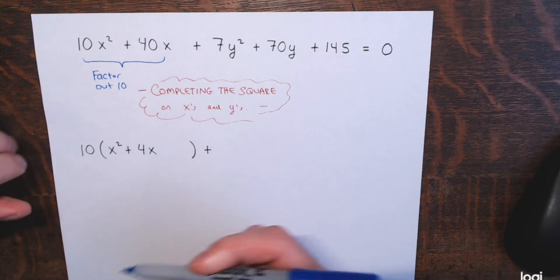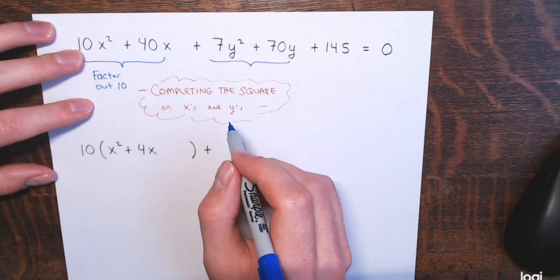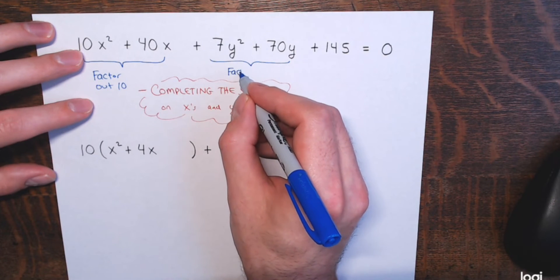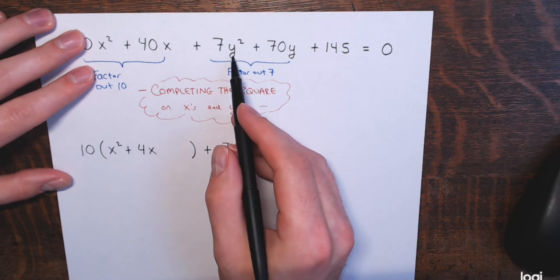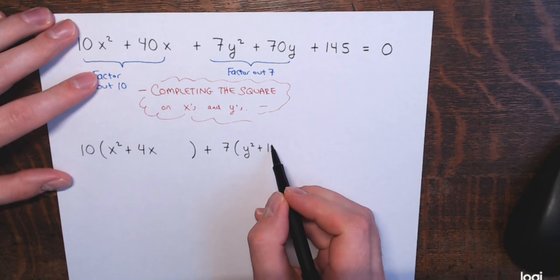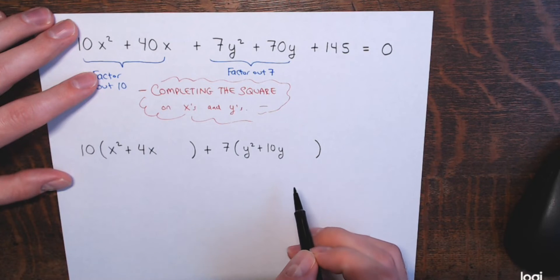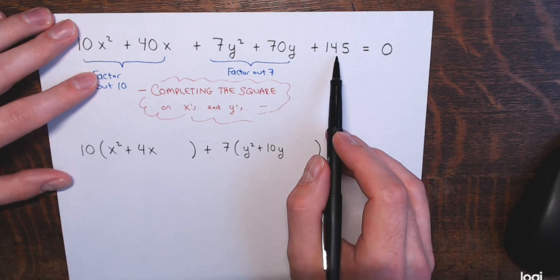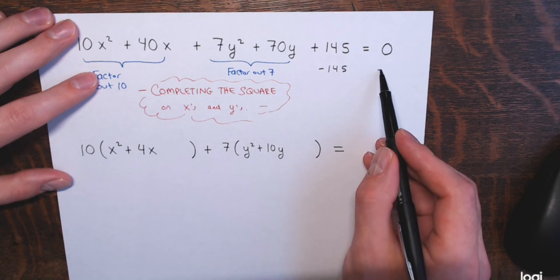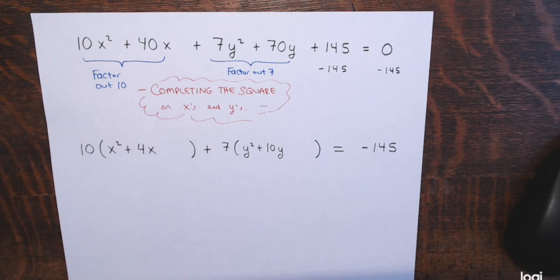Then do something similar for the y terms. The y² term has a coefficient of 7, not 1, so I'll factor out 7 from just the y terms. That gives 7 times (y² + 10y), with space to complete the square inside. The constant term, plus 145, I'll take away from both sides from the get-go, leaving negative 145 on the right side. Now comes the completion of the squares.